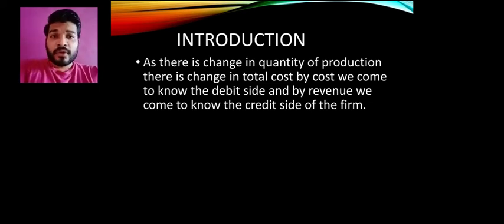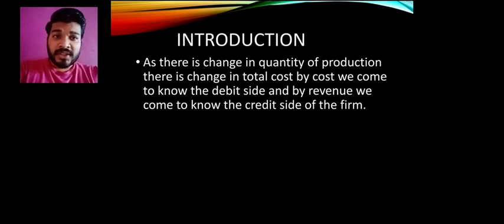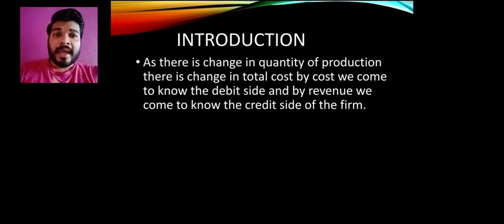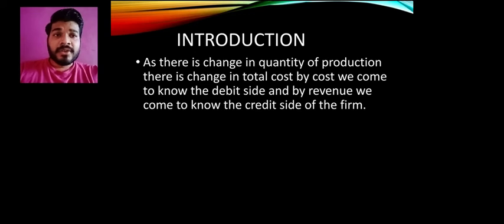As you have learned in accounts, there is the debit and credit rule — debit the expenses and credit the incomes. Here similarly, as there is a change in quantity of production, the total cost of making any product also changes. That cost is nothing but an expense for the company. When the product has been produced and sold in the market, that becomes the revenue. Cost of production is recorded on the debit side, while revenue is recorded on the credit side. So the company tries to balance accounts, where cost of production is their operating expense.